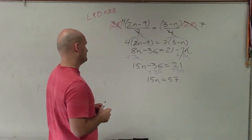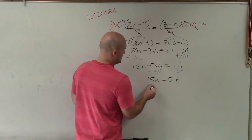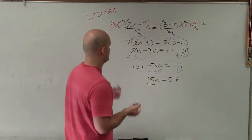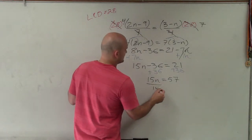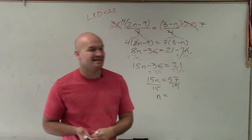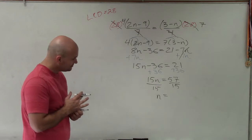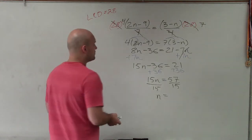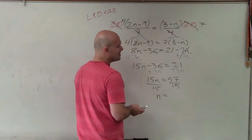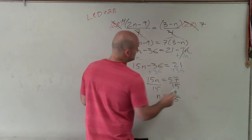That doesn't look too fun, but I'll divide by 15 on both sides. Now, 15 does not divide evenly into 57. However, 3 does — 3 goes into 57 nineteen times, and 3 goes into 15 five times. So I can simplify to get my final answer: n equals 19 over 5.